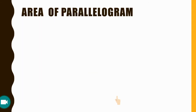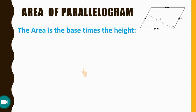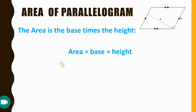What is the area of a parallelogram? The area of a parallelogram is base times height — that is, base multiplied by height equals the area of the parallelogram.